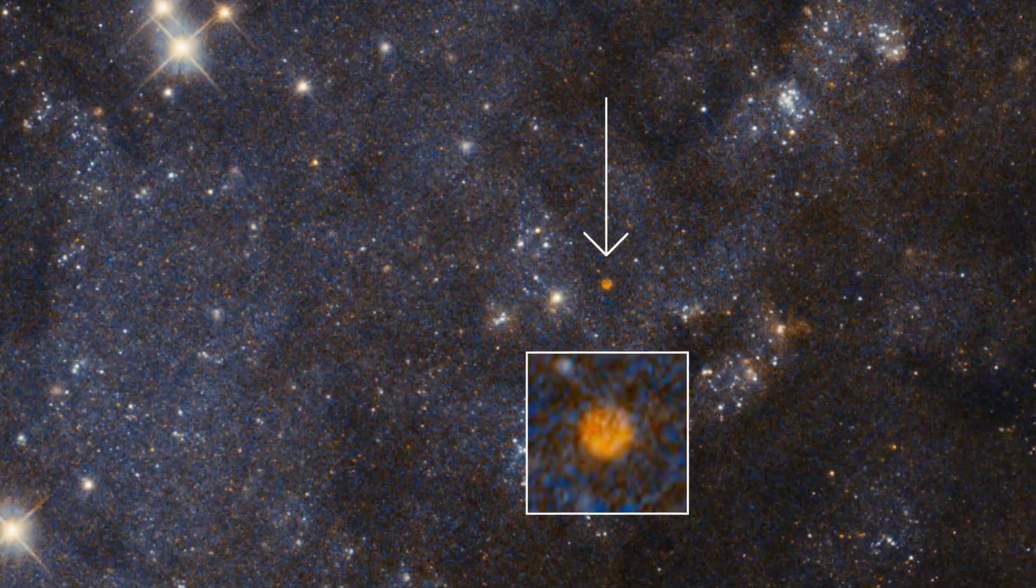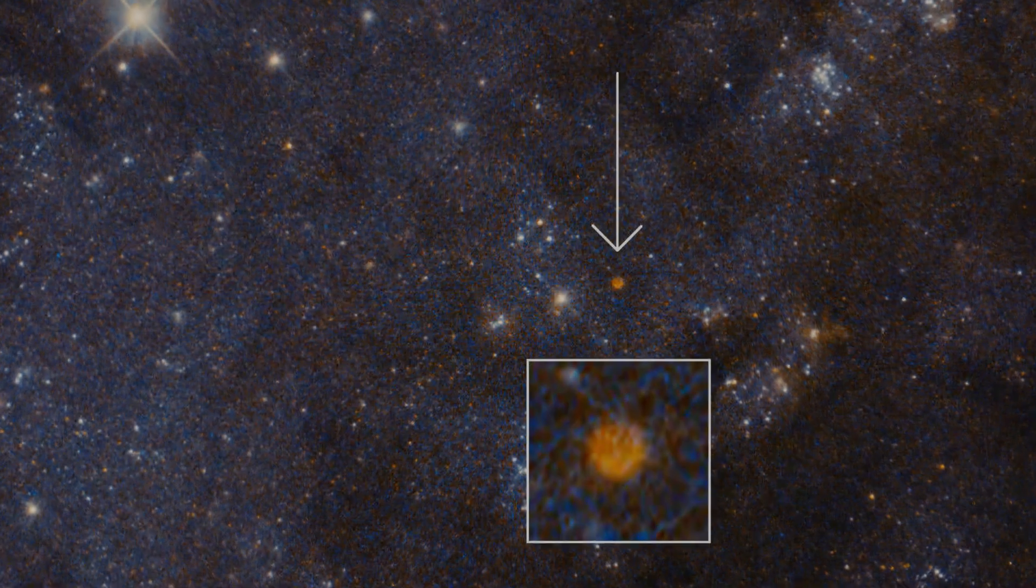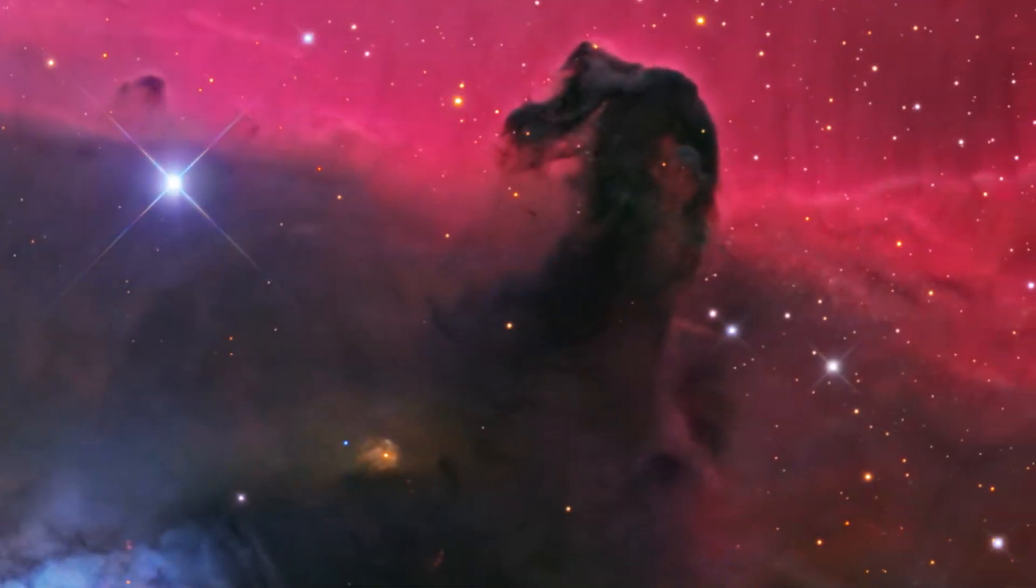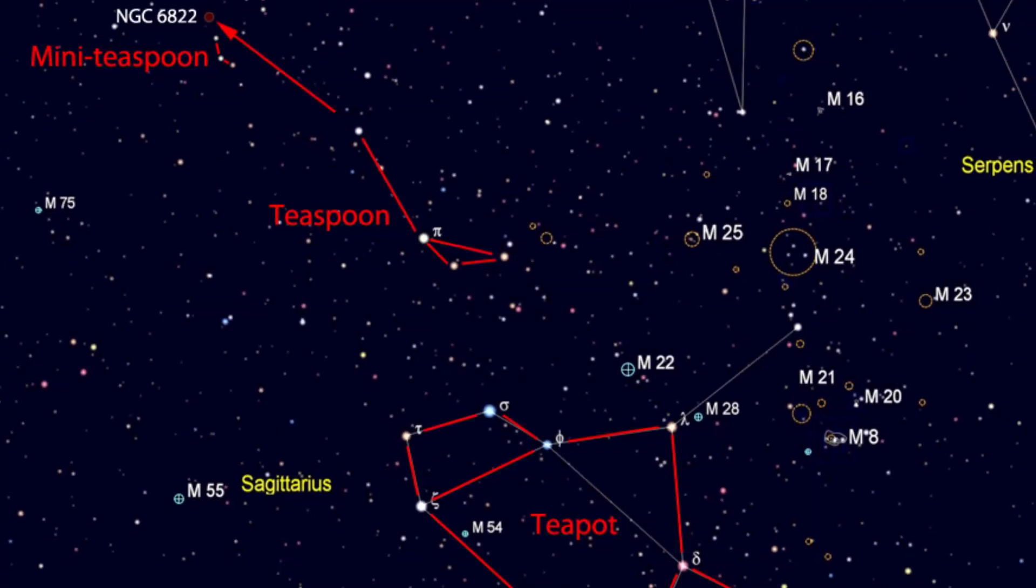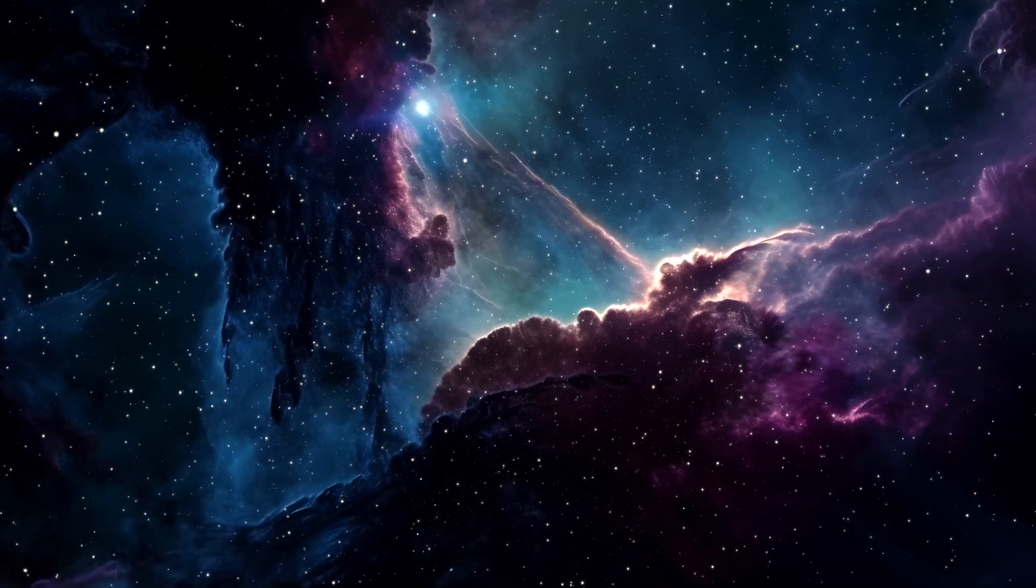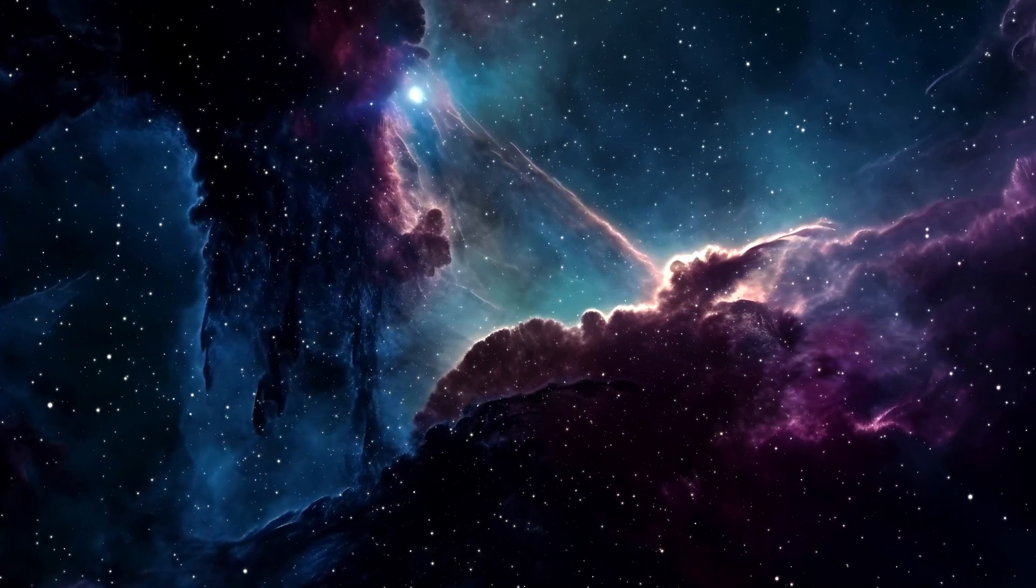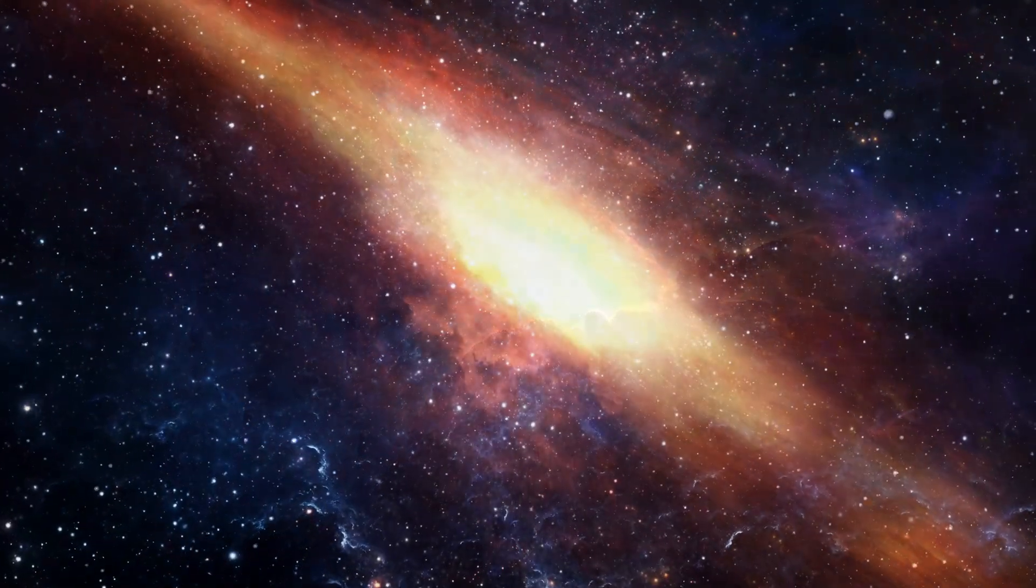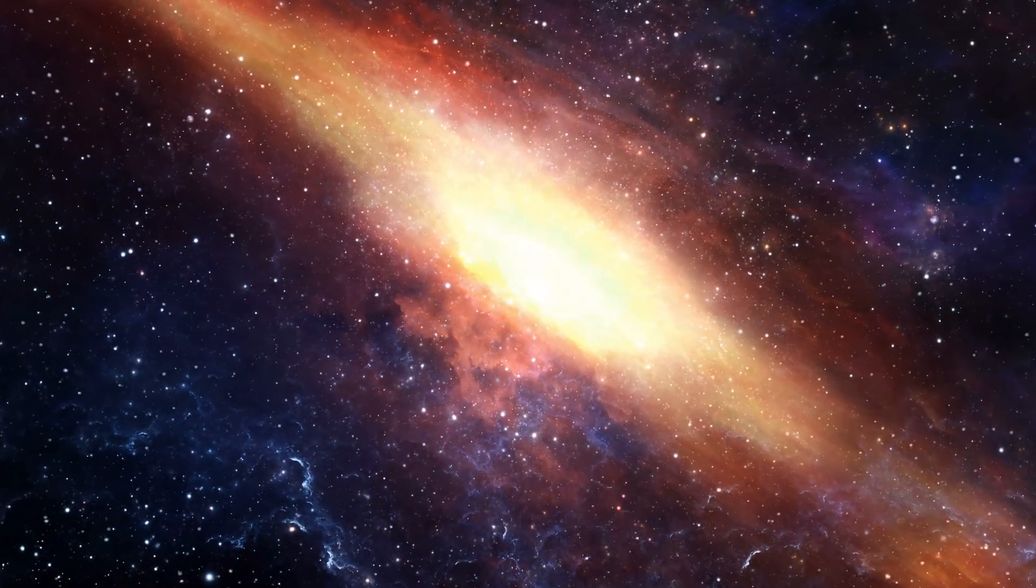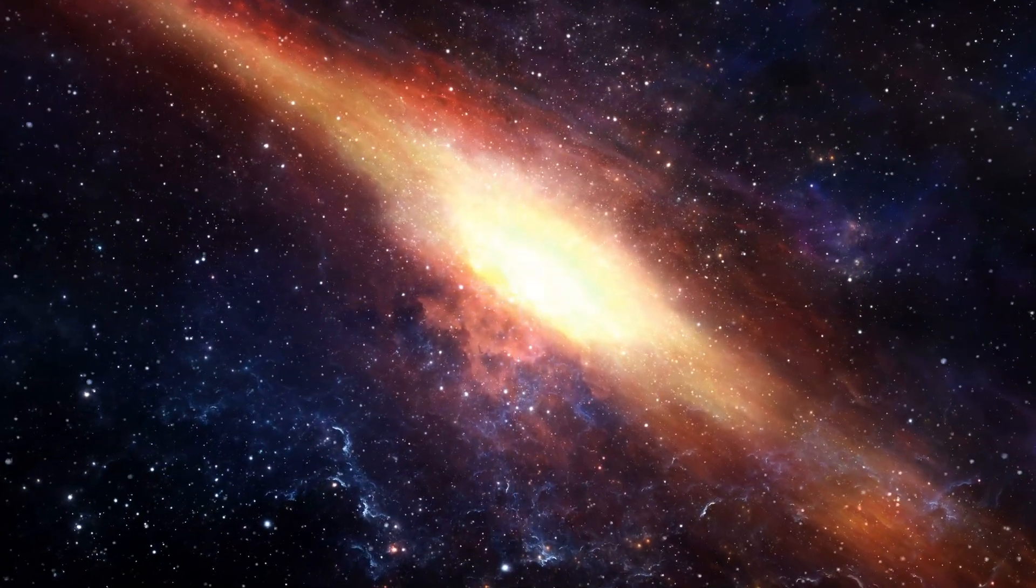Each of these Euclid images, from the detailed observation of IC 342, the illuminating view of the Horsehead Nebula, to the revealing capture of NGC 6822, not only demonstrates the telescope's advanced capabilities but also enriches our understanding of the universe. They contribute significantly to our knowledge of galaxy formation, evolution, and the intricate processes governing celestial phenomena.